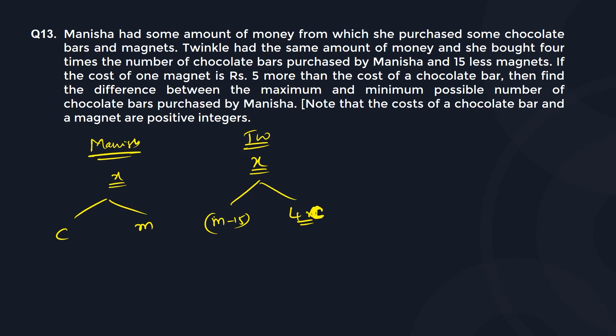The cost of one magnet is 5 more than the cost of a chocolate bar. So let us say the chocolate bar cost is a, and the magnet cost therefore is a plus 5.